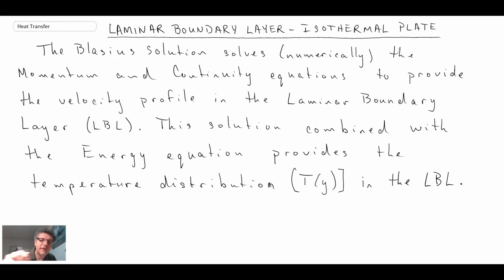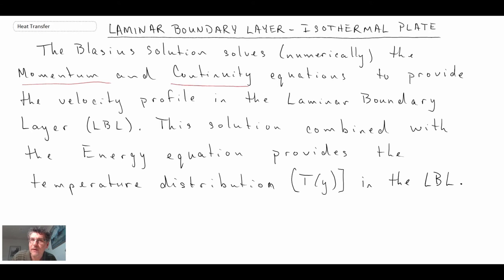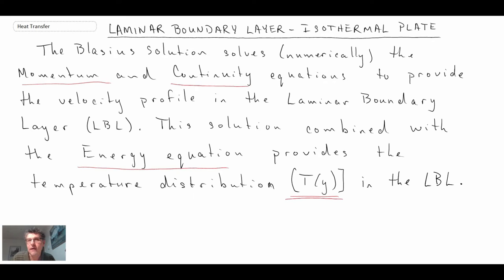Blasius solved this numerically — hand integration. He used the momentum and the continuity equation, so momentum is the Navier-Stokes equation, reduced for boundary layer flow, which makes it a little bit easier. He was able to solve it using what we call a similarity solution, converting the partial differential equation into a nonlinear ordinary differential equation, and then he integrated that by hand. When you get that solution for the velocity profile, you can then take it with the energy equation and come up with the temperature profile above the wall.